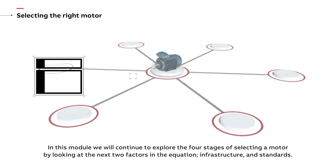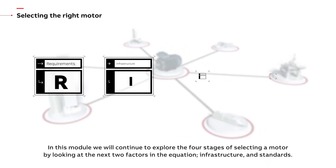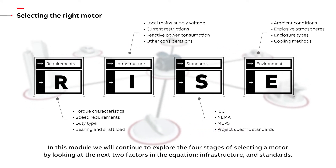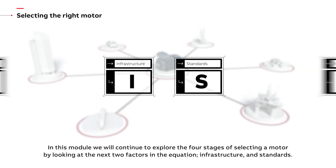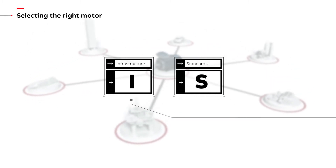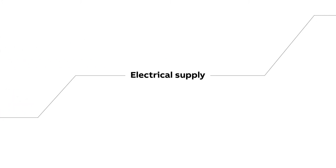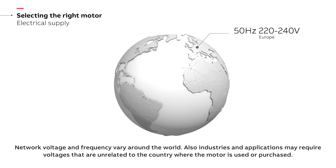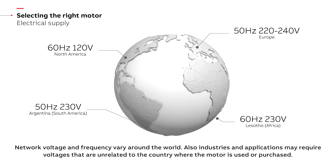In this module we will continue to explore the four stages of selecting a motor by looking at the next two factors in the equation: infrastructure and standards. Network voltage and frequency vary around the world; also, industries and applications may require voltages that are unrelated to the country where the motor is used or purchased.